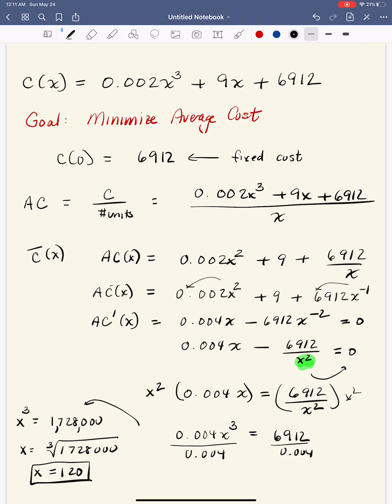So at a production level of 120 units, it looks like our average cost is minimized, but we do have to verify this. Remember that setting it equal to 0 just means there's a horizontal tangent here.